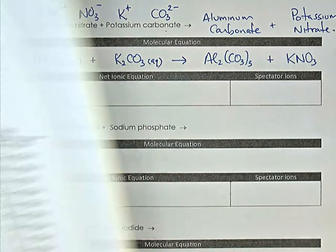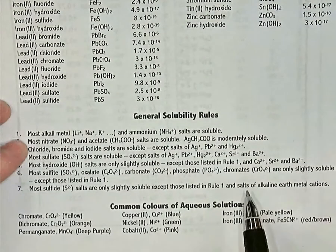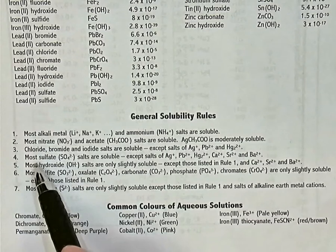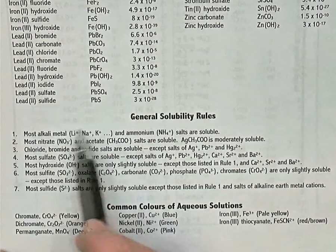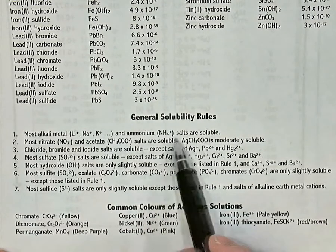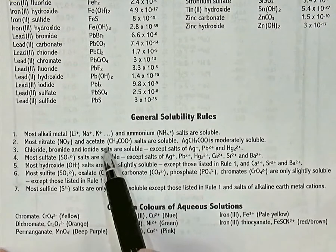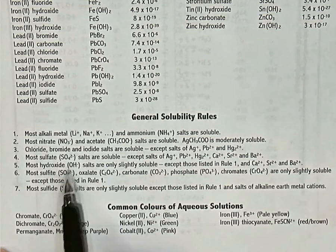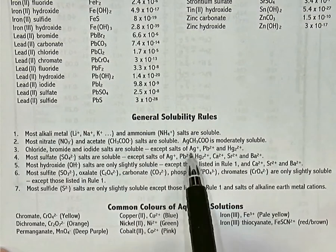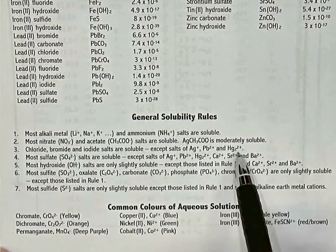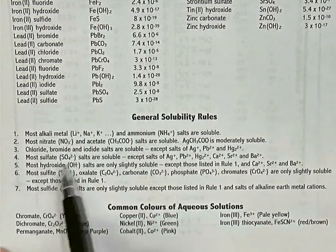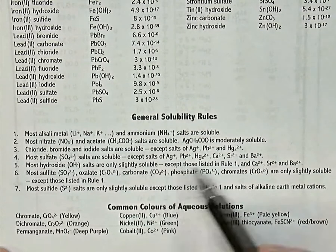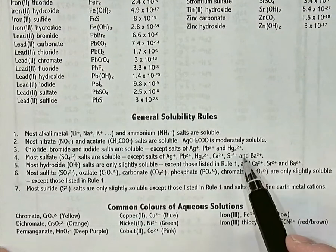In our data booklets there's a general solubility rules table. Alkali metal salts and ammonium salts are highly soluble. Nitrate salts and acetate salts are also highly soluble — silver acetate is a slight exception. Chloride, bromide, and iodide salts are soluble except when bonded with silver or lead. Sulfate salts are usually very soluble, but silver sulfate, lead sulfate, calcium, strontium, and barium sulfate are not very soluble.